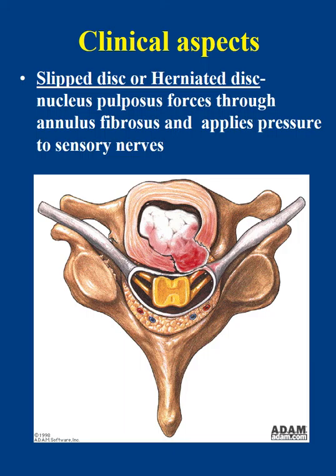Herniated discs occur when the gelatinous nucleus pulposus protrudes into or through the annulus fibrosus, creating a posterior lateral bulging into the vertebral canal that pinches the spinal cord and nerves. Cervical herniated discs cause neck pain and pain down the upper limbs; the most common cervical disc ruptures occur between C5–C6 or C6–C7. Lumbar herniated discs are associated with low back pain and pain down the entire lower limb, including sciatica; the most common lumbar disc rupture occurs between L4 and L5.